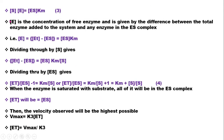The enzyme concentration is the concentration of free enzyme, given by the difference between the total enzyme added to the system and any enzyme in the enzyme-substrate complex. That is, free enzyme concentration equals total enzyme minus enzyme-substrate complex concentration. Dividing through by substrate concentration gives enzyme concentration as total enzyme minus enzyme-substrate concentration, all over Km divided by substrate concentration.